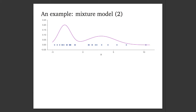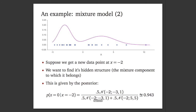Here's an example of data from a mixture model — a two-component mixture. On the left is one narrow component; on the right, a wider component. Now suppose we get a new data point at x equals minus two and we want to find its hidden structure. We can compute this with the posterior distribution: the probability that Z equals zero — that the data point is on the left component — is about 94%, which is what you'd expect, since minus two is well into that hump on the left-hand side.